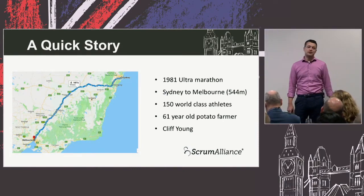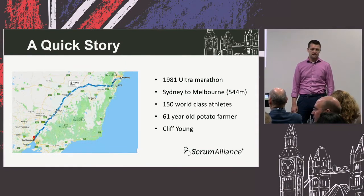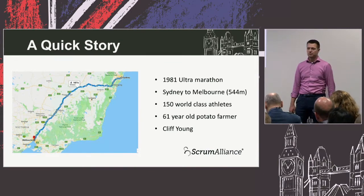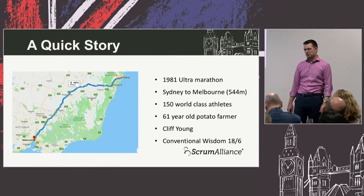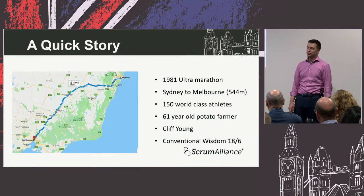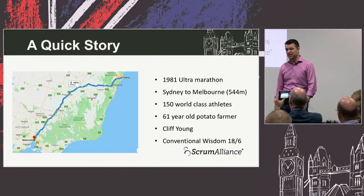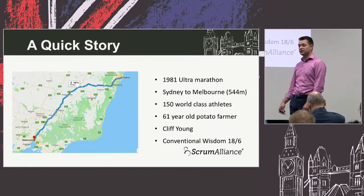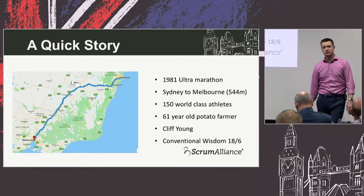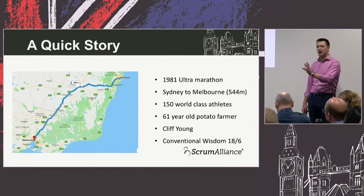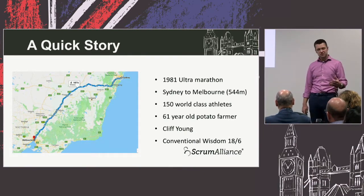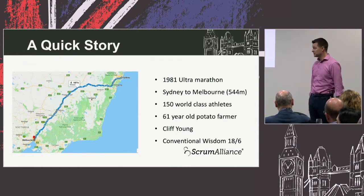Cliff Young won the race. The conventional wisdom was what they called 18-6 — run for 18 hours, sleep for 6. But Cliff either didn't know about that or thought 'screw it,' and he did what became known as the Cliff Shuffle — he just shuffled continuously for days. While the elite athletes rested, he kept going and won. He challenged assumptions and changed the way these things were run.